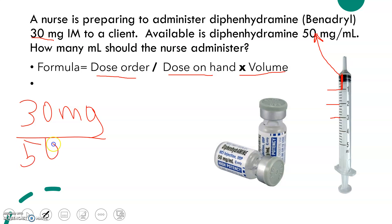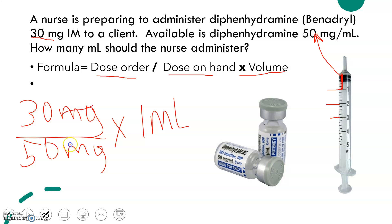Dose order is 30 milligrams, over the dose on hand which is 50 milligrams, times the volume which is one ml. Milligram cancels the milligrams. Three divided by five gives you 0.6. Multiplying times one ml gives me 0.6 ml.